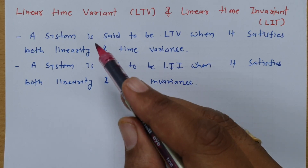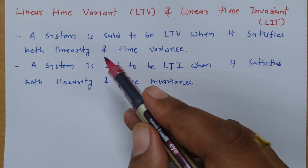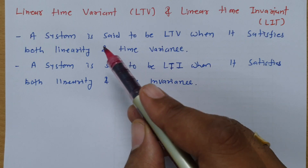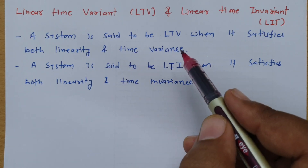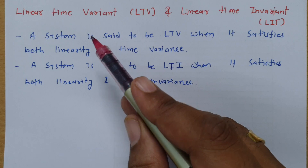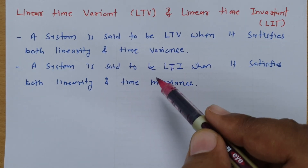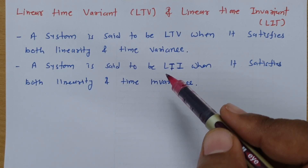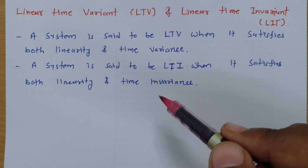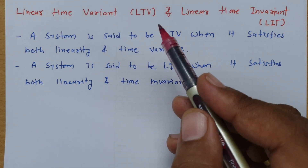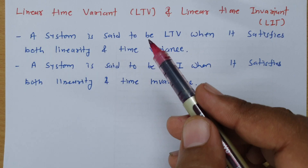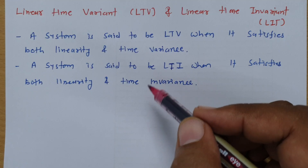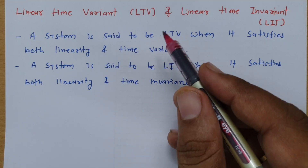If a system is linear as well as time variant, we can say that system will be a linear time variant system — LTV. If the system follows linearity as well as time invariance, we can say the system is a linear time invariant system — LTI. So when we try to determine whether a given system is LTV or LTI, we need to check both conditions: linearity as well as time variance.